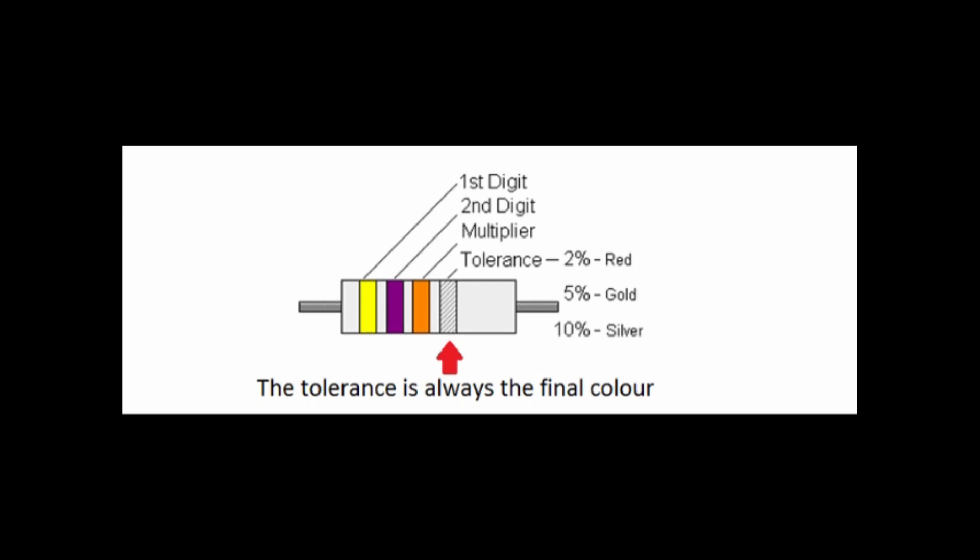Resistors are heavily used in electronics. It is important that you know how to read the value of a resistor. A color code is used to represent the value of a resistor. In the diagram you can see four colors on the resistor.